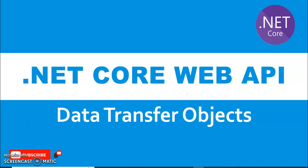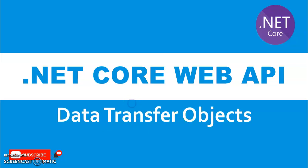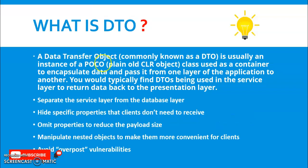Welcome to this session on .NET Core Web API. In this session we are going to see what is a Data Transfer Object and how we can implement DTO inside our .NET Core Web API. A DTO, commonly known as Data Transfer Object, is usually an instance of a POCO — Plain Old CLR Object. It is an instance of a POCO class used as a container to encapsulate data and pass it from one layer of the application to another.